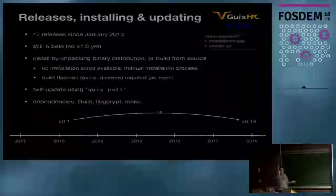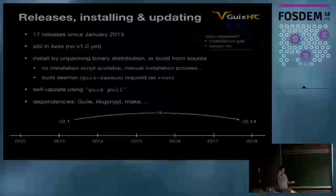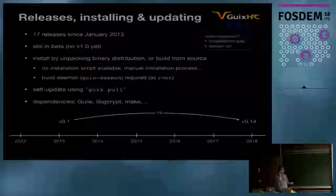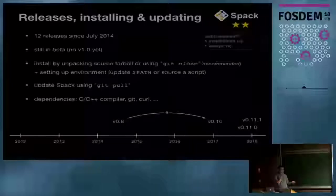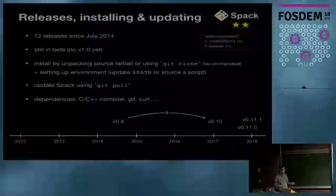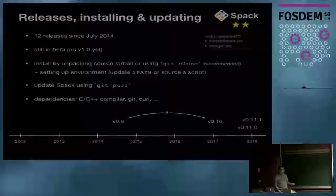Guix is more recent than Nix and not yet at version 1.0. There's now an installation script available — it was fixed after they saw my draft, which is good. Spack has had a handful of releases since 2014 but is not stable yet. Installation is different: you just git clone the GitHub repository and get going straight away. I gave this a lower rating because it feels a bit off — especially if you give this to a scientist and they ask 'what is this git thing?' To update Spack you just do git pull.